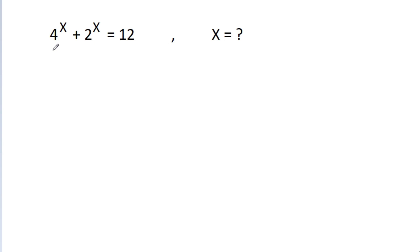We have given that 4 power x plus 2 power x is equal to 2n. Then we have to find the value of x.